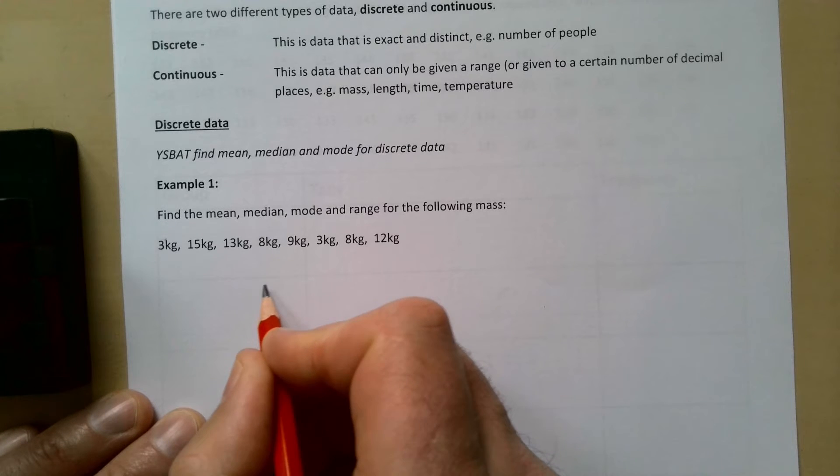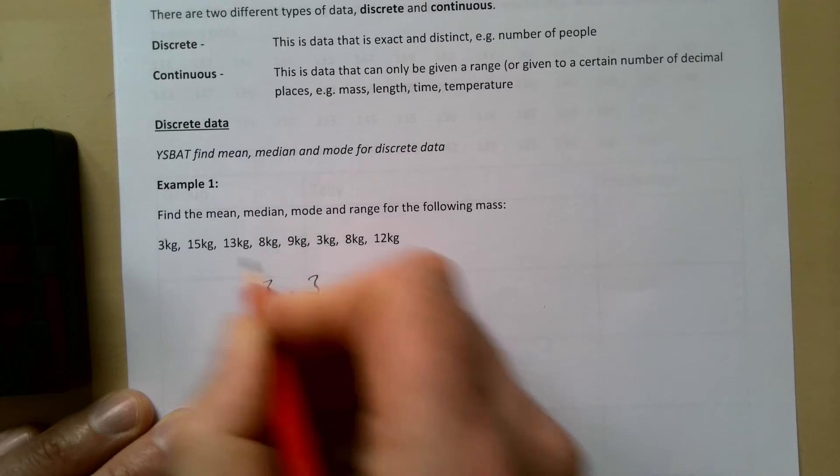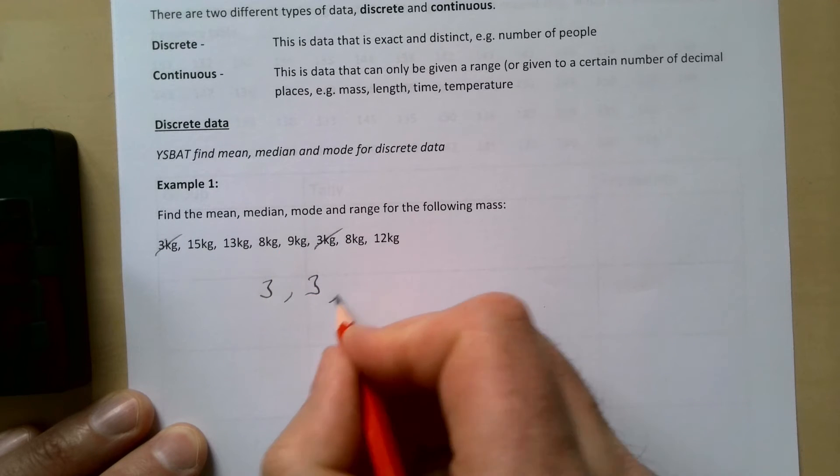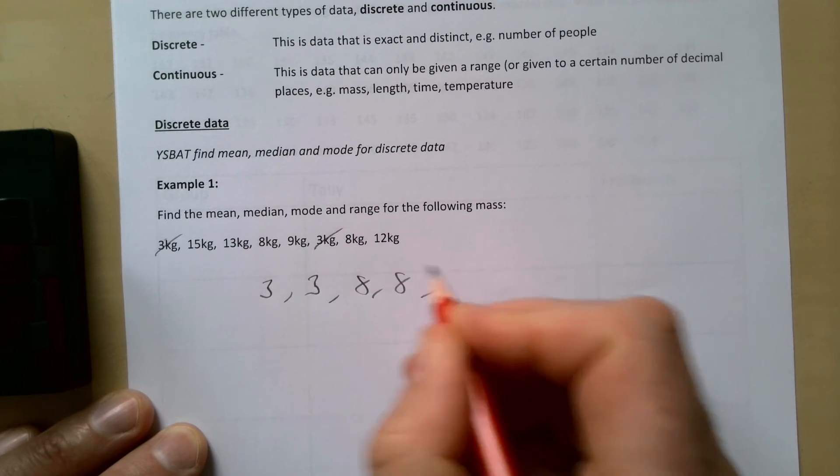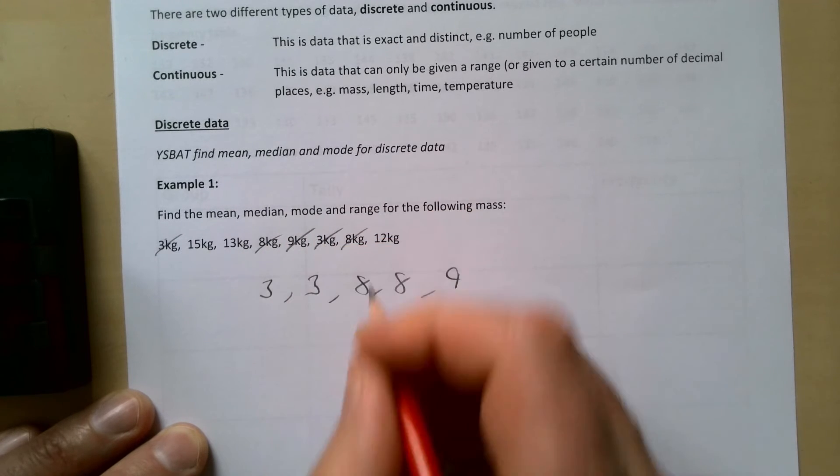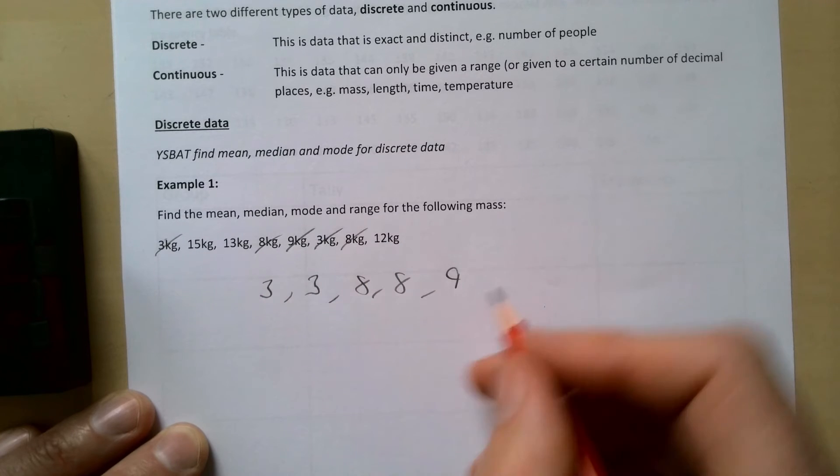So if I try and write these out in order, hopefully I'll get it right. So we have a 3, and then a 3, then I see two 8s - doing it in order will help with the median. We have a 9, and then a 12, 13, and 15.